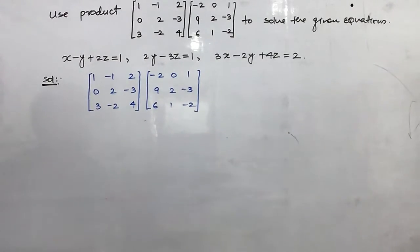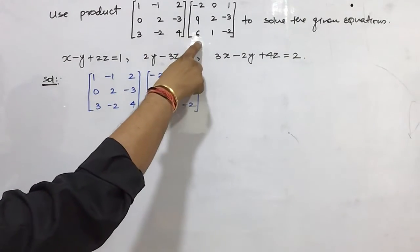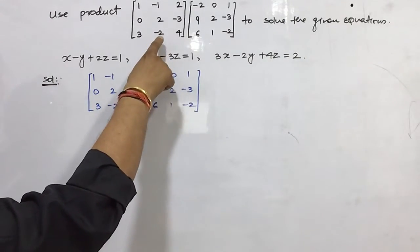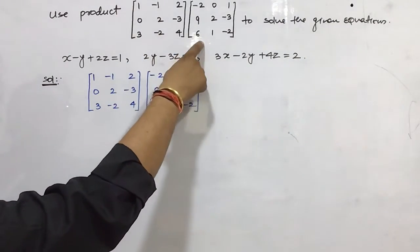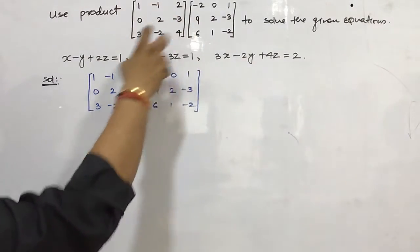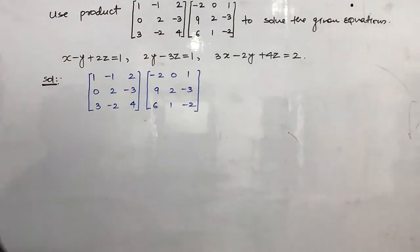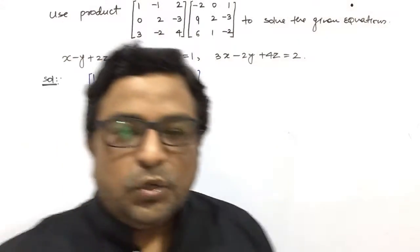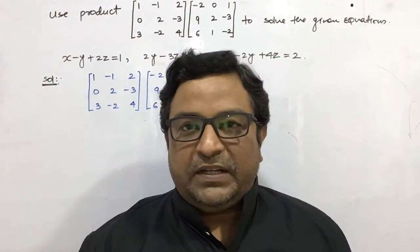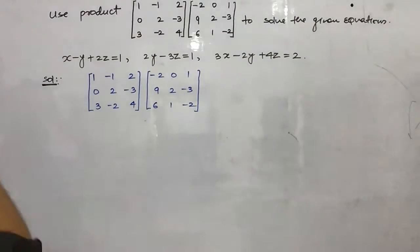In this video you are seeing that here are two matrices of three by three. You have to find out the product of these two matrices, and by using that product you have to solve the given equations. In short, we are not going to find out the co-factor of the given equations directly.